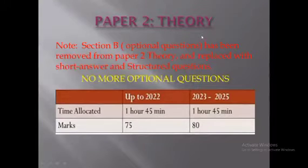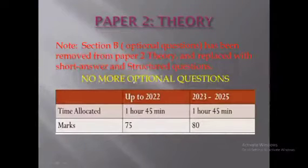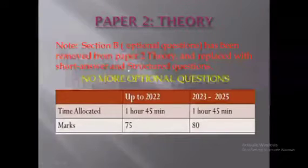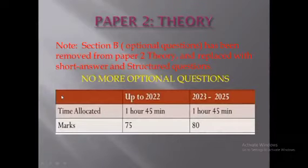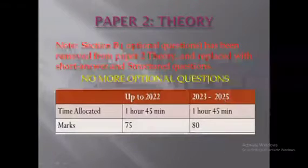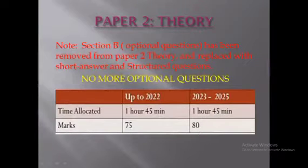Paper two is the theory paper. There are many changes in this paper. Section B optional questions have been removed. Two theories have been replaced with short answers and structured questions, meaning we have no more optional questions and there are no choices in the paper. The marks have also changed — up to 2022, marks for the paper were 75, but from 2023 to 2025, the marks are now 80. The time allocated remains the same: 1 hour 45 minutes.